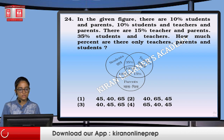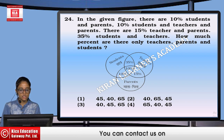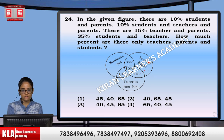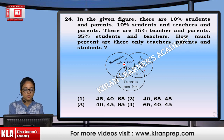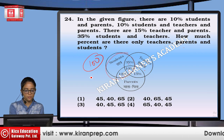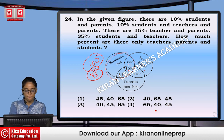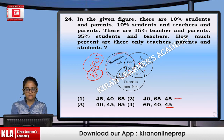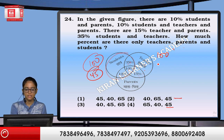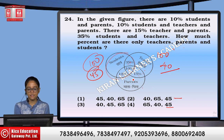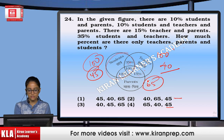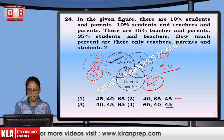In a Venn diagram with students, teachers, and parents: 10% are students and parents, 10% students and teachers and parents, 15% parents and teachers, 35% students and teachers. The full circle of students is 100%. Common parts total 55%, leaving 45% as only students. For teachers: 60 are involved with others, leaving 40 only teachers. For parents: 35 total overlap, leaving 65 only parents. Answer: only teachers 40%, parents 65%, students 45%. Option number 2.